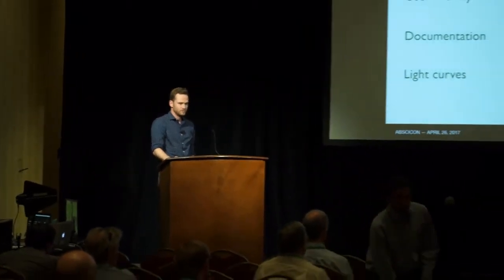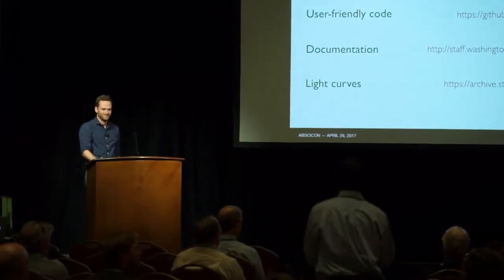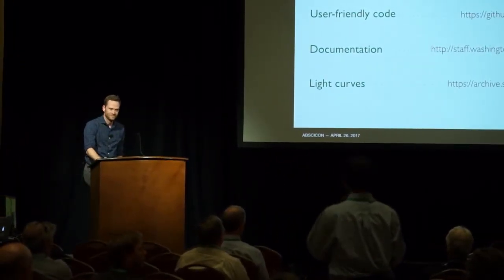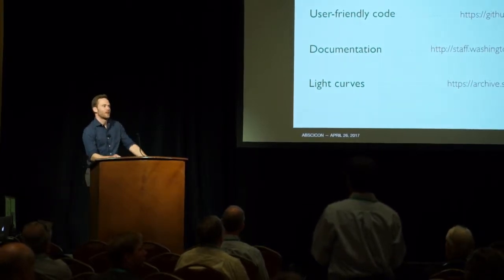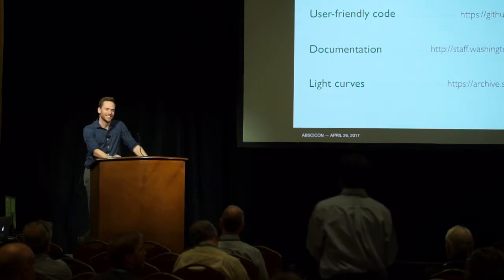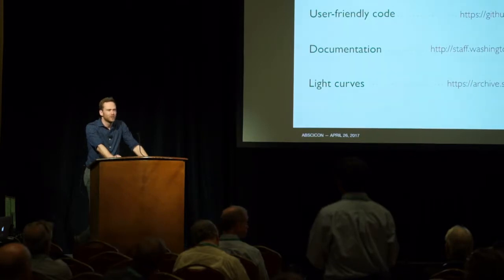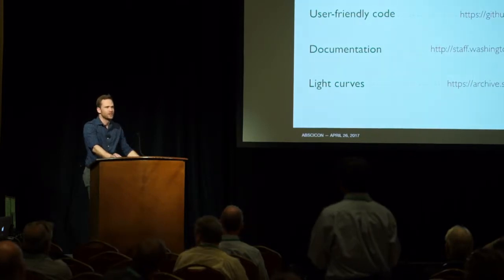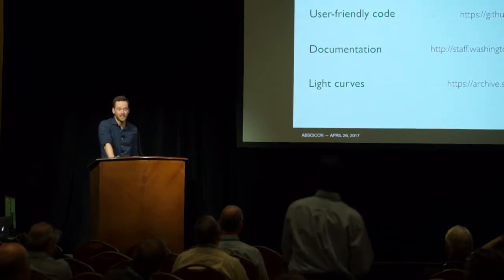We have time for some questions. Do you have stellar information for those habitable zone planets? One is an M dwarf, and I think the other three are K stars — maybe early M. I'm not exactly sure; I'd have to ask Ethan, but I can get back to you.